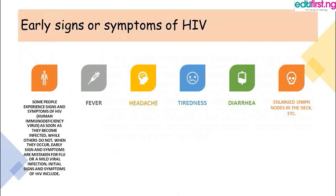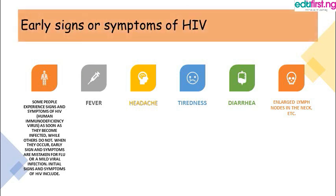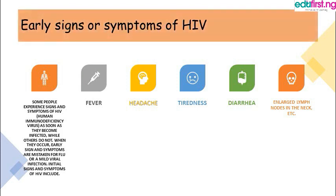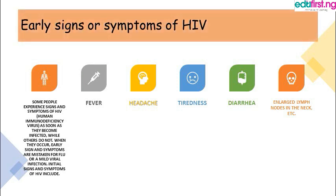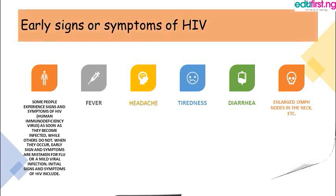Now let's look at the early signs or symptoms of HIV. Some people experience signs and symptoms of HIV as soon as they become infected while others do not. When early signs do occur, they are often mistaken for flu or a mild viral infection. Initial signs and symptoms of HIV include fever, headache, tiredness, diarrhea, or enlarged lymph nodes in the neck and other parts of the body.